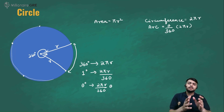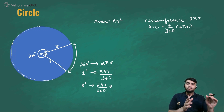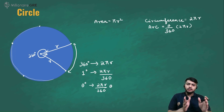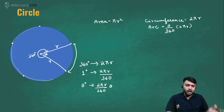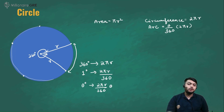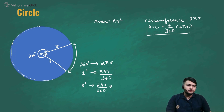To summarize: if the angle at the center is 360°, the boundary is 2πr. If the angle is 1°, the arc is 2πr/360. If the angle is θ°, the arc is (θ/360) × 2πr, which is the same formula we stated earlier.